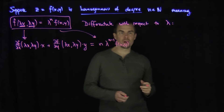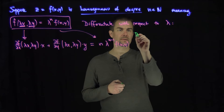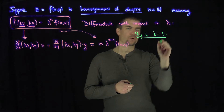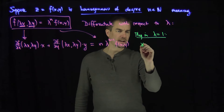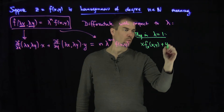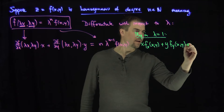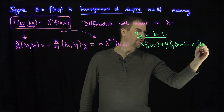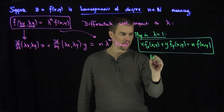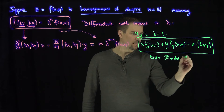Now I can plug in lambda equals 1 into this formula. Plugging in lambda equals 1, we get: x times f_x(x, y) plus y times f_y(x, y) equals n times f(x, y). This equation is known as the Euler first-order PDE.